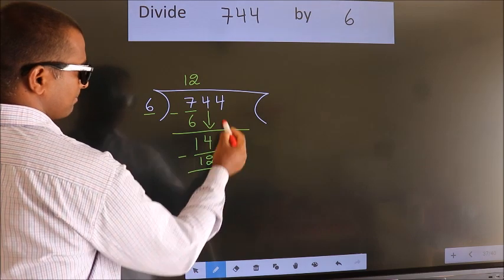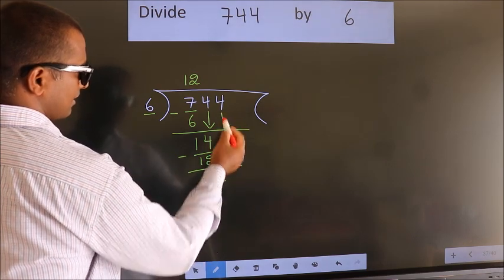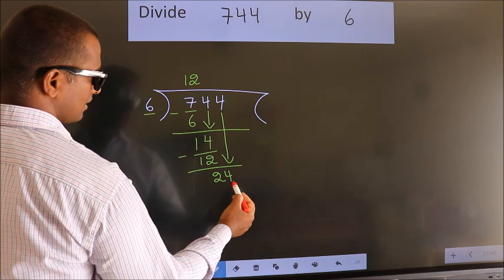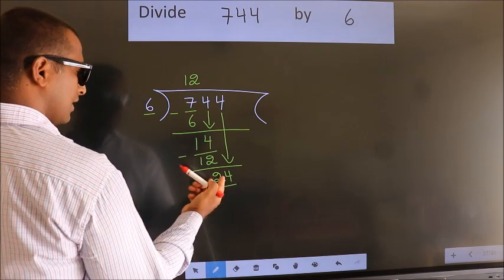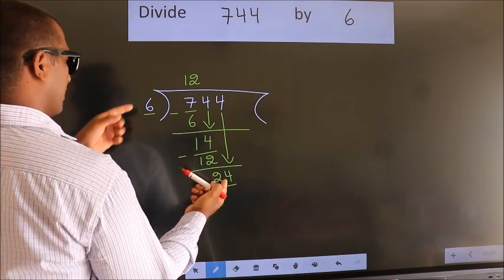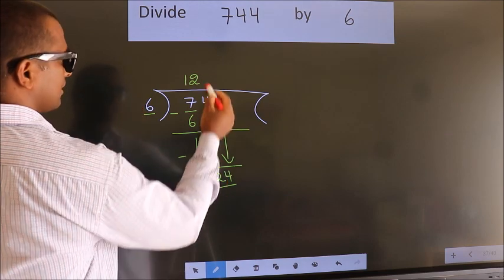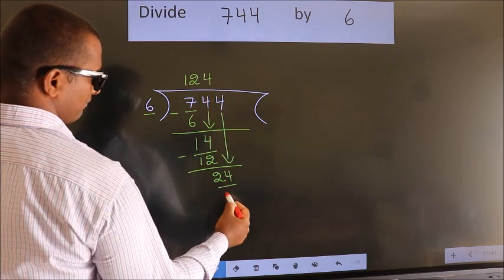After this, bring down the beside number. So 4 down. So 24. When do we get 24? In 6 table. 6 4s, 24.